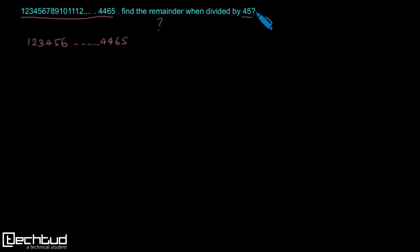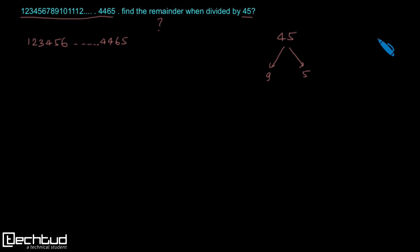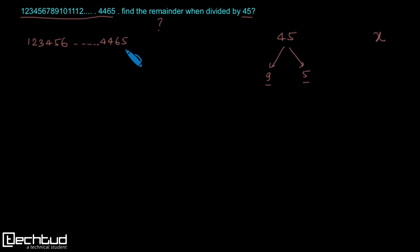The number we are dividing by, that is 45, has two factors: 9 and 5. A number x is divisible by 45 if it is divisible by both 9 and 5. Now, this given number has 5 at the unit place, so it will be divisible by 5.